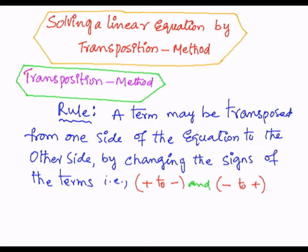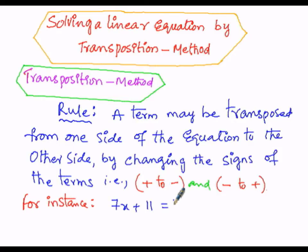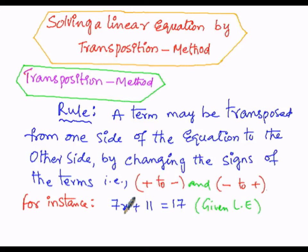We will be transposing terms from one side of an equation, that is LHS, to the other side, that is RHS, by changing the signs of those terms — particularly from positive to negative and negative to positive. For illustration, let us take one example: 7x + 11 = 17. This is a given linear equation in which the variable is x and its coefficient is 7. Here I want to transpose +11, which is on the left-hand side, to the right-hand side.